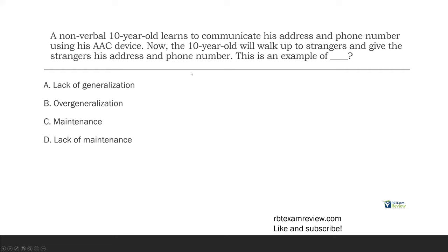A nonverbal 10-year-old learns to communicate his address and phone number using his AAC device, the Augmentive Communication Device. Now the 10-year-old will walk up to strangers and give these strangers his address and phone number. This is an example of what? Well, it's a problem, right? However, we're looking for a specific term. We know the 10-year-old can do this behavior because now he's going up to strangers and giving strangers his address and phone number. Not really what this is probably for. We need to now shape it down. It's great he learned how to do it, but right now, is he not generalizing? Is there a lack of generalization? No. There's too much generalization. It's going to be an example of overgeneralization. We're doing it too much.